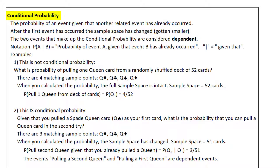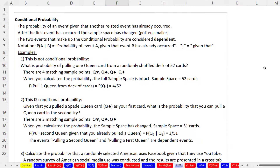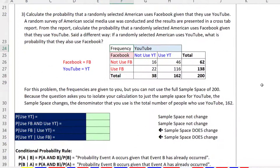We can define conditional probability as the probability of an event, given that another related event has already occurred. Importantly, after the first event has occurred, the sample space has changed. The notation we use is: probability of event A, given that event B has already occurred. That vertical bar means 'given that.' Now let's scroll down and look at some examples.